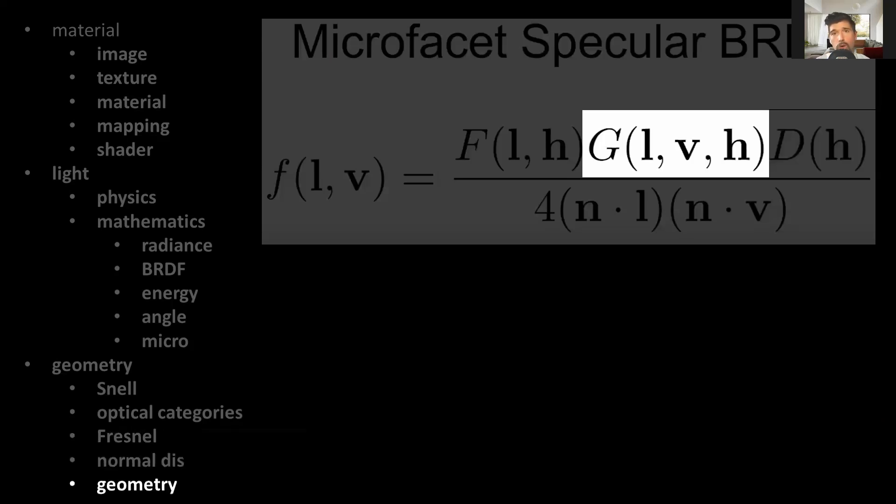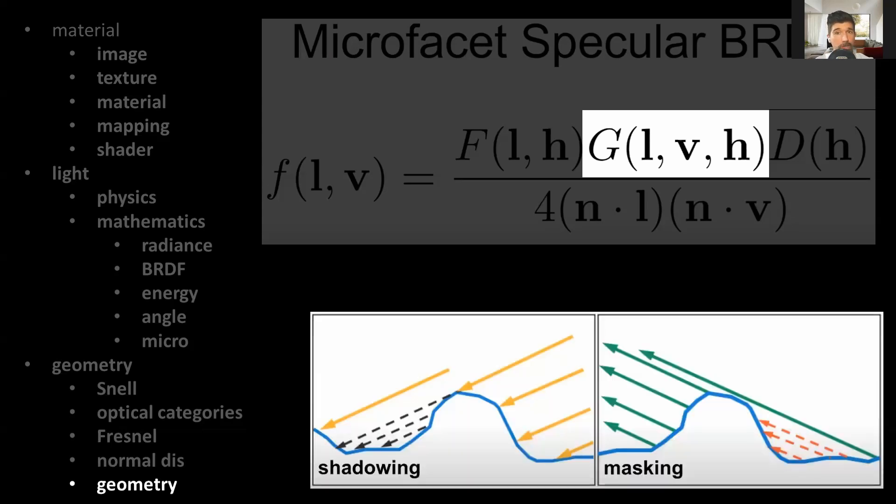So if the normal distribution function tells us the amount of microfacets that are pointed in the right direction, and Fresnel tells us how reflective they are, the geometry function tells us of those properly oriented microfacets, how many are masked or shadowed by other microfacets so they actually reflect the light right into the viewing ray. So during the reflection process, due to surface imperfections, some light rays cannot reach those properly oriented microfacets, while the other light rays reflect but do not reach our eye. The light rays that do not reach these microfacets are then shadowed, while the light rays that are reflected into a viewing ray and are blocked by other microfacets are masked.